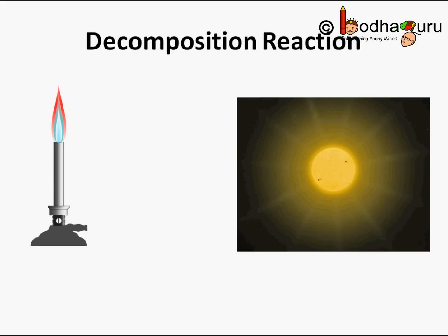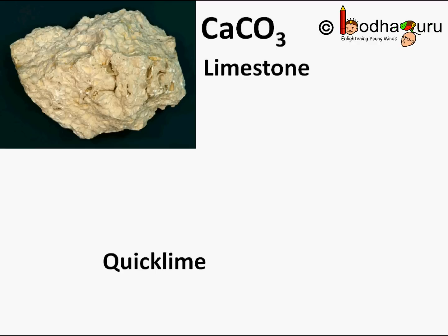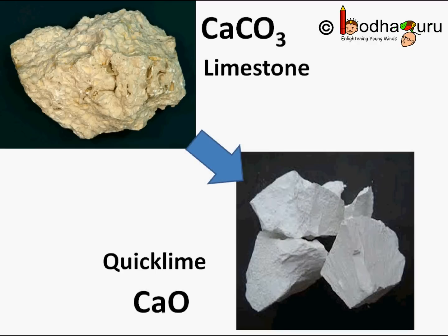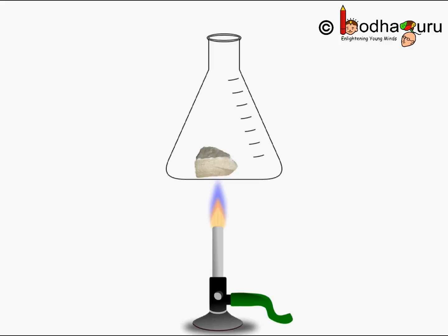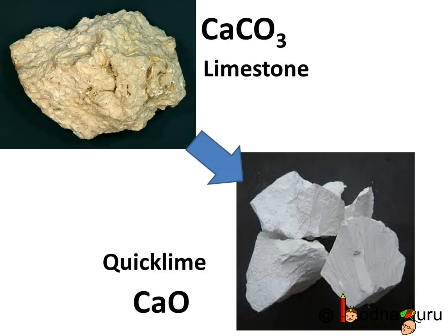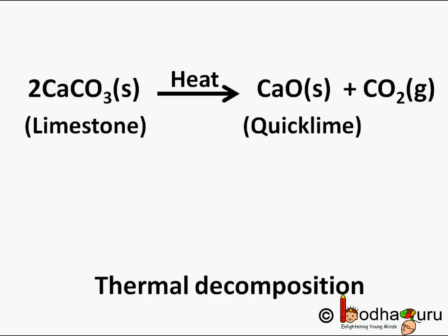Another example of a decomposition reaction is the decomposition of calcium carbonate, i.e. limestone, to calcium oxide and carbon dioxide. Calcium carbonate, i.e. limestone, is often heated to give quicklime, i.e. calcium oxide. Quicklime has many uses — for example, it is used in cement production. Here, a molecule of calcium carbonate breaks down by heating and new simpler molecules are produced.